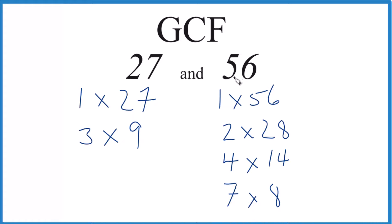So these are the factors for 56. Let's see what we have in common. 1 goes into 27 and 56 evenly. 3 doesn't. How about 9? No. And 27? No. So actually, the only common factor for 27 and 56 is 1. That's the greatest common factor.